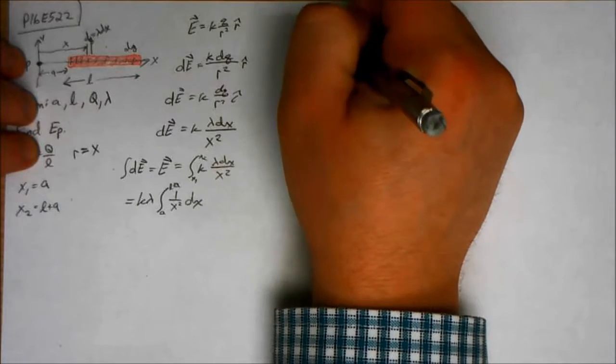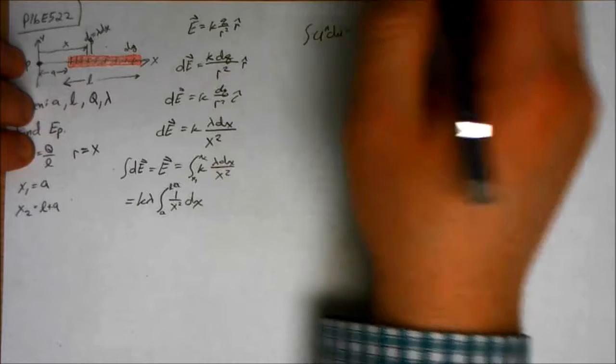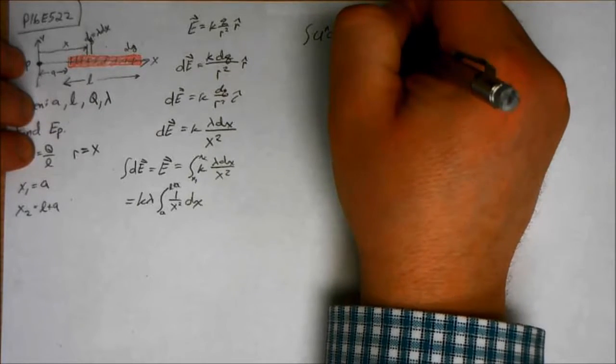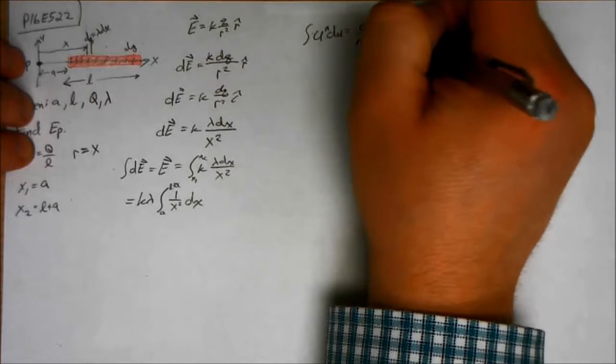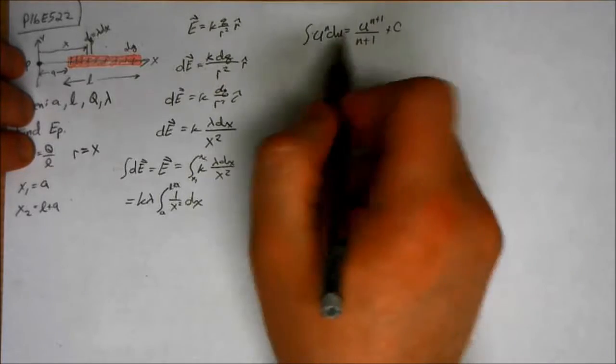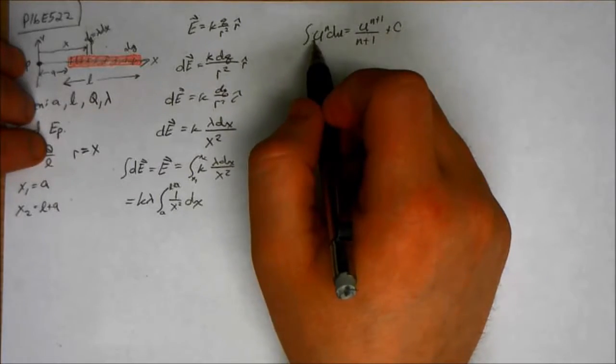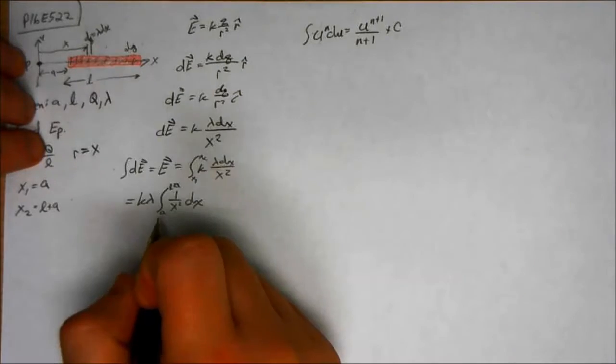1 over U to the N du is equal to U to the N plus 1 over N plus 1 plus a constant, just because it's an indefinite integral. I didn't put limits on it.